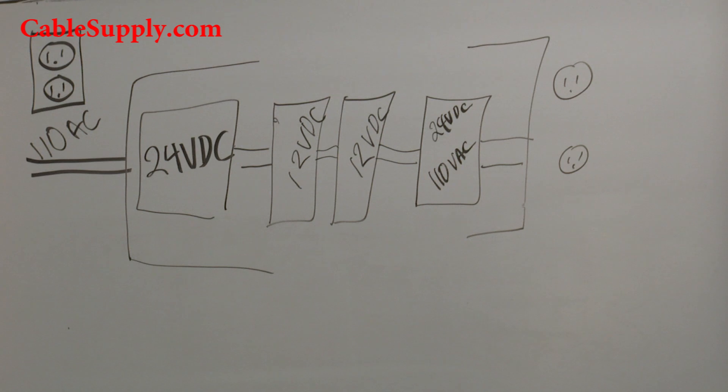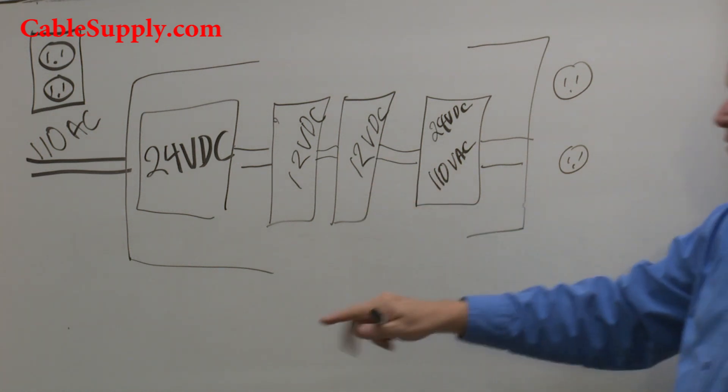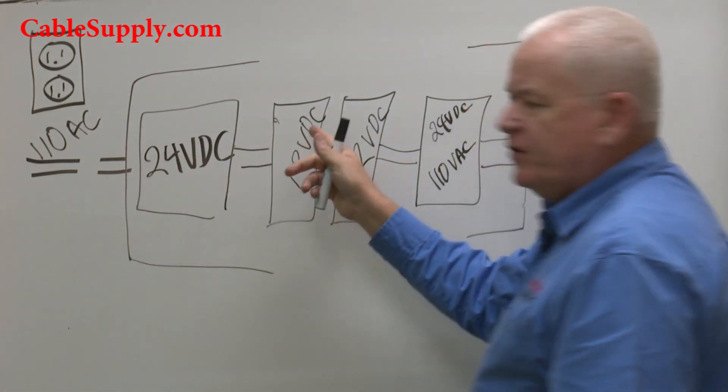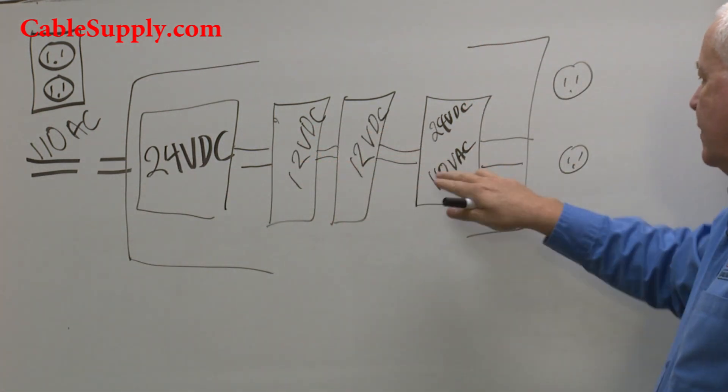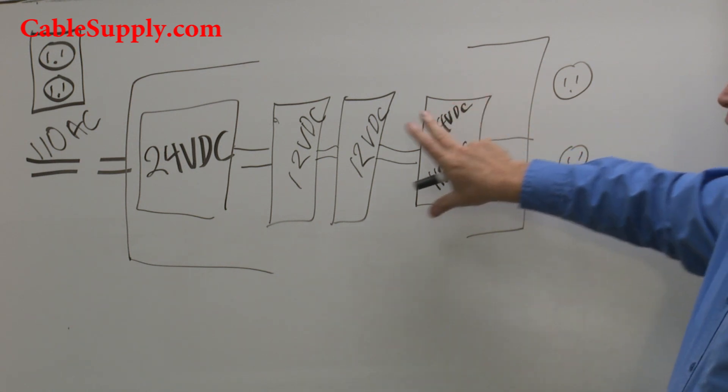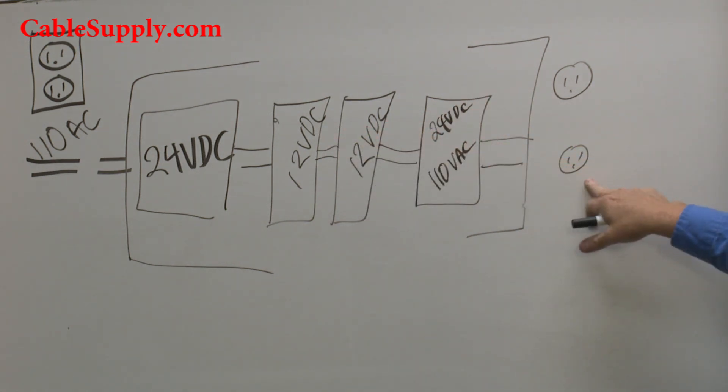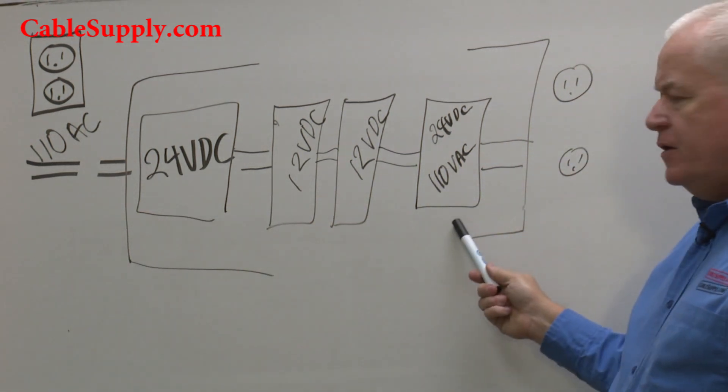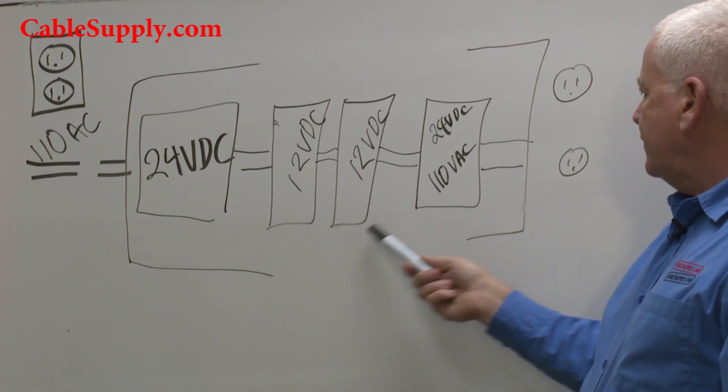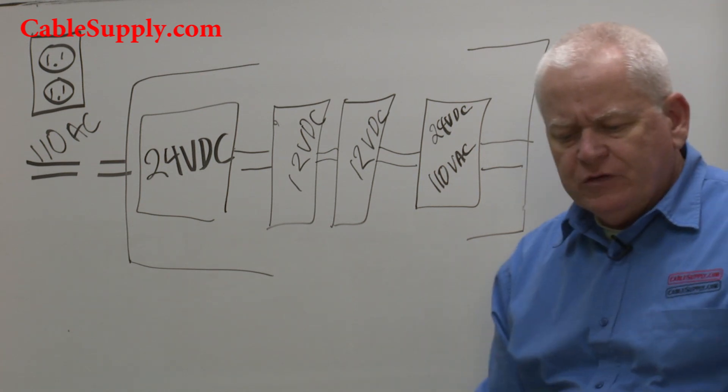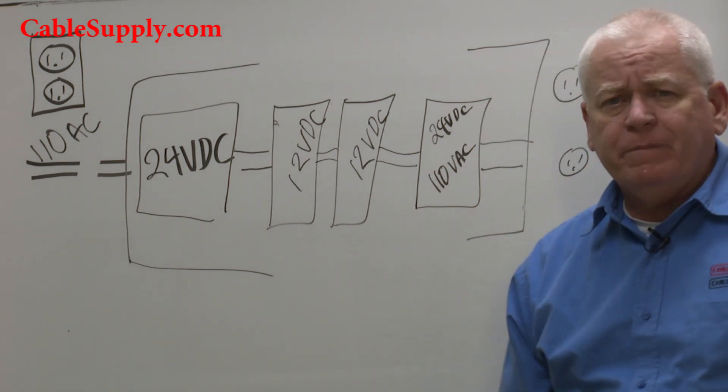So that's how your UPS is attached. What happens is if you lose this 110 current over here, the batteries kick in and this little system right here converts it from 24 volts back to 110 volts. Now there's a lot of power that's consumed from here to here, and these batteries have to do a lot of work to get it up to 110. So most UPS's don't last very long.